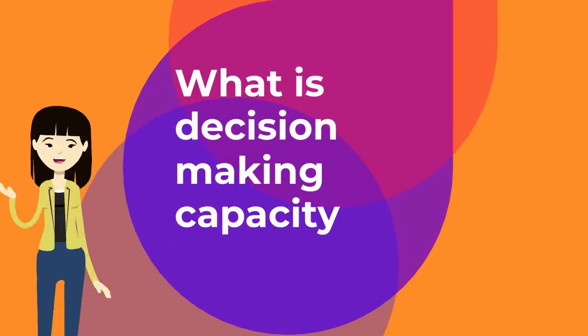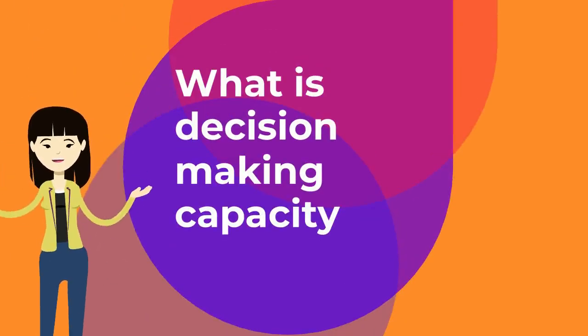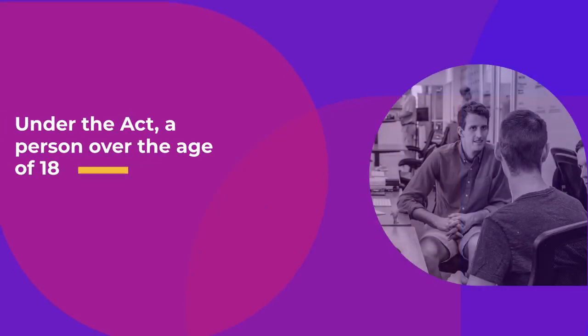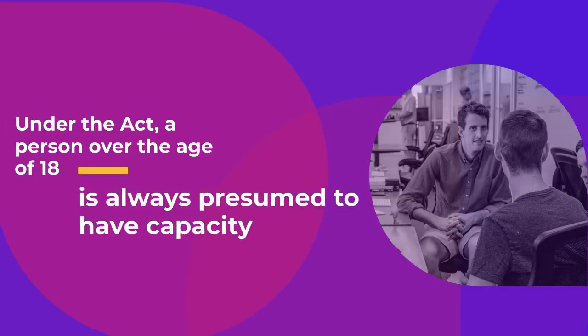What is Decision Making Capacity? Decision Making Capacity is a person's ability to understand the nature and consequences of the particular decision to be made by them at a particular time, taking into consideration the choices available to them at that time. Under the Act, a person over the age of 18 is always presumed to have capacity.